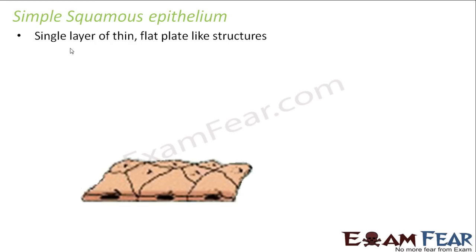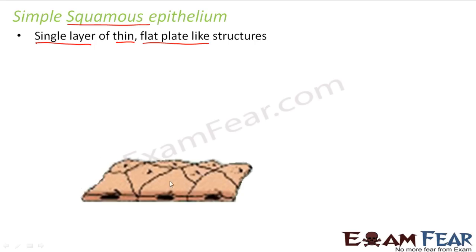Simple epithelium always has a single layer. So simple squamous epithelium is a single layer of thin, flat, plate-like structures — they are called squamous. The word squamous refers to flat, plate-like structures. As you can see in the picture, it is a very thin layer. You can get an idea of the thickness from this — thin, flat, plate-like structure. It looks somewhat like a plate.